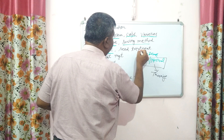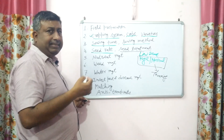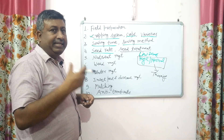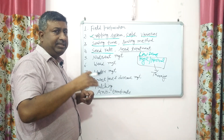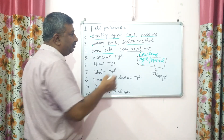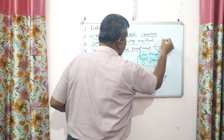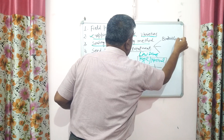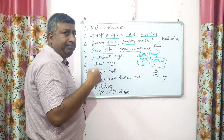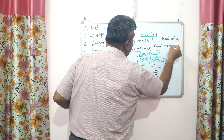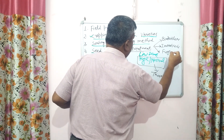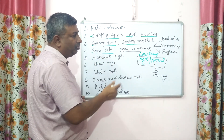Seed treatment is important — against diseases, against insects, and for pulse crops, with rhizobium. There may be the risk of soil-borne disease or soil-inhabiting insects that can damage the seed. Once the seed is damaged and re-sowing is required, sowing is delayed. The sequence of seed treatment is known as FIR: first treat with fungicide, then insecticide, and last is rhizobium or any biofertilizer. Free-living biofertilizers can be used in any crop.